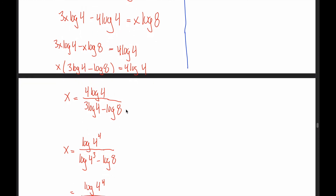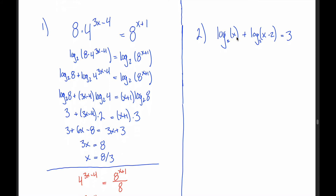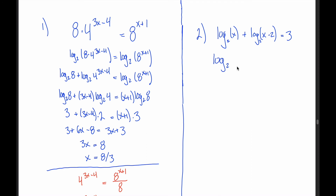That was a lot of extra work and not something required for this class, but it shows the methods are equivalent. Now for the last equation: log base 2 of x plus log base 2 of x minus 2 equals 3. First, what you cannot do: don't try to cancel the logs individually. What you can do is use the first log rule to combine the left side into a single log: log base 2 of x times (x minus 2) equals 3.